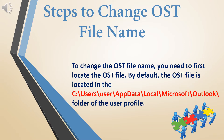To change the OST file name, you first need to locate the OST file. By default, the OST file is located at: C:\Users\[username]\AppData\Local\Microsoft\Outlook\ — inside the folder of the user profile.